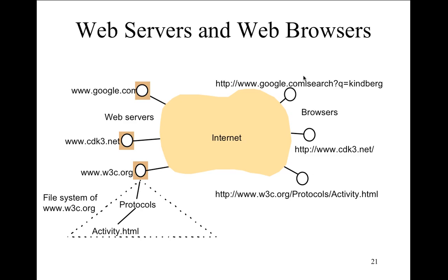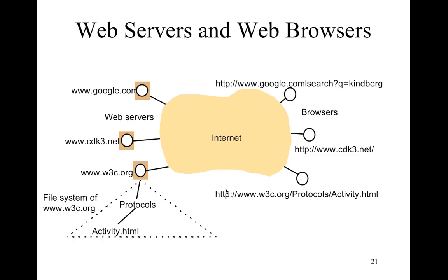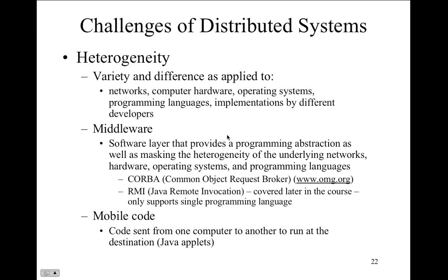Web servers and web browsers — how do they fit into the picture? Google, the W3C, and various protocols support connectivity into what we call the internet, with web browsers connecting from the client side. One of the interesting challenges of distributed systems is heterogeneity — not everybody is the same. There's a variety of differences in network speeds and technologies: wired, wireless, DSL, high-speed, low-speed, cable, cellular.